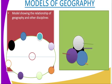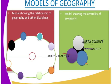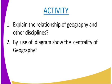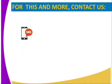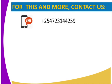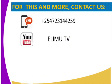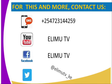That marks the end of our lesson. The activity: explain the relationship of geography and other disciplines, and by use of diagrams, show the centrality of geography. The reference is Tested KRB 2003, Book One. For more information you can contact us through SMS, YouTube, Facebook, or Twitter. Stay tuned to LMTV. Thank you.